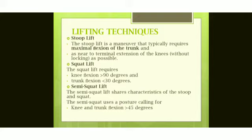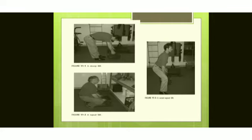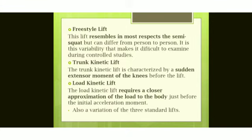The semi-squat lift shares the characteristics of both the stoop and the squat. In the stoop, the trunk is maximally flexed and the knee is extended. In the squat, the knee flexion is 90 degrees and trunk flexion is 30 degrees. But in the semi-squat, the knee and trunk flexion are greater than 45 degrees but below 90 degrees. As you can see in the diagram, this is the squat lift — the person has bent the trunk and the knee is around 90 degrees, and the trunk is also bent to greater than 45 degrees.